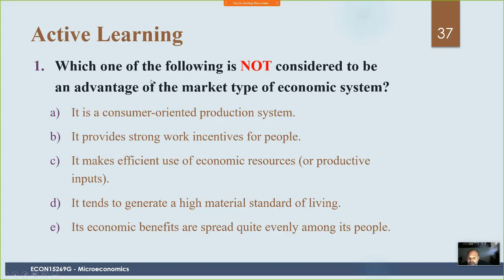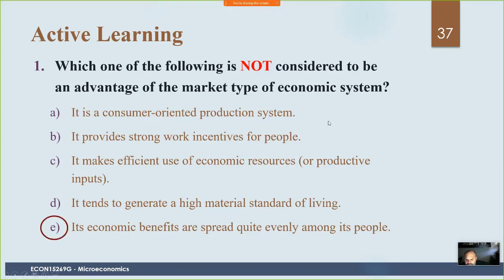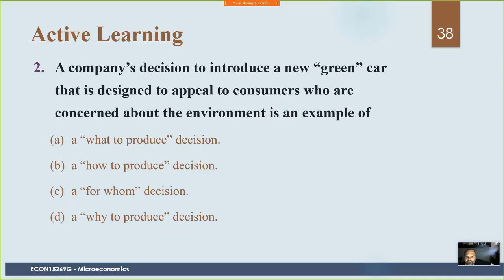Let's finish with some multiple choice questions. Which of the following is not considered an advantage of the market type of economic system? The answer is E — 'its economic benefits are spread quite evenly among its people' — because we know that's not true; one negative aspect of a market economy is that it can produce high levels of inequality. For the next question about a company introducing a new green car designed to appeal to environmentally concerned consumers — don't get tricked — the answer is A: this relates to the 'what to produce' decision, which is about how scarce resources should be used to produce goods.